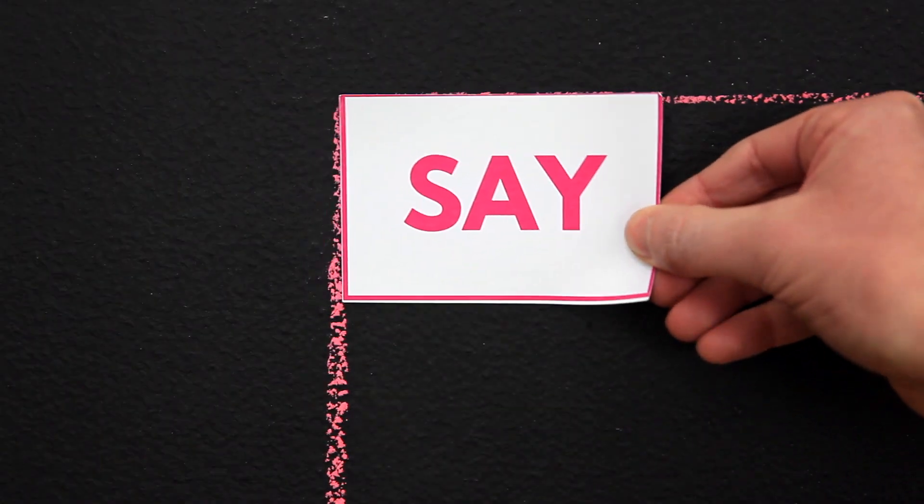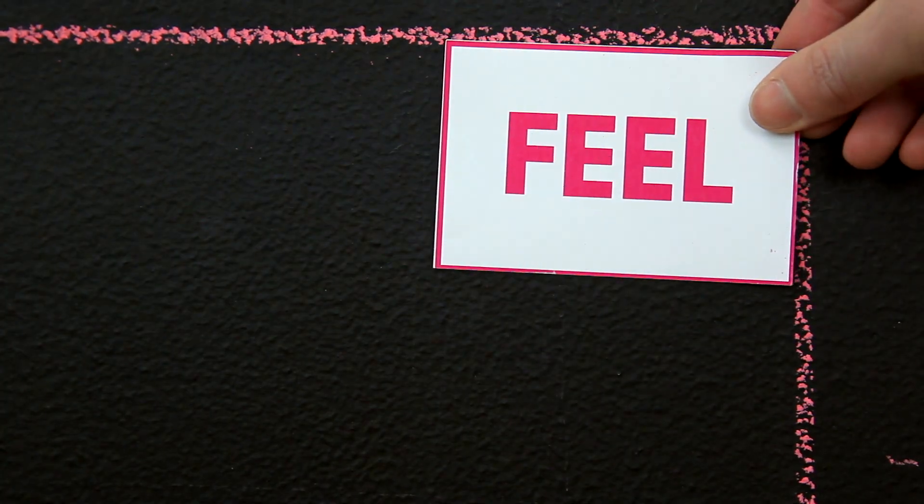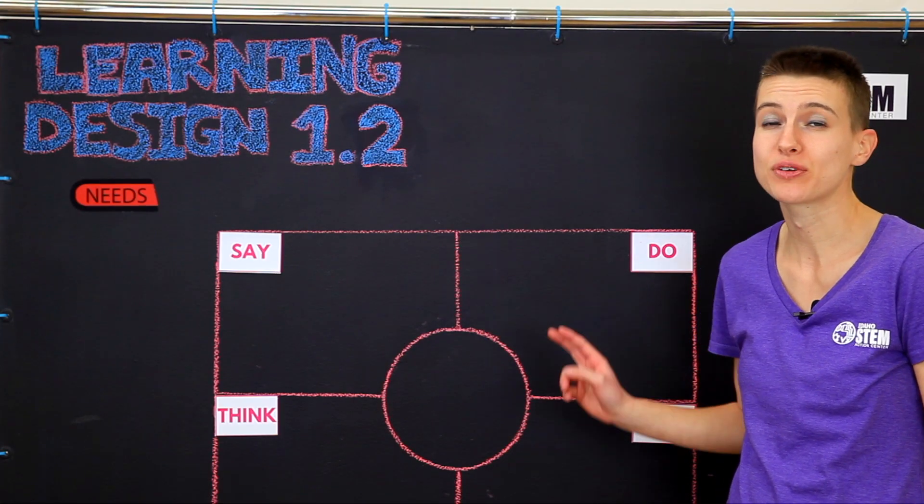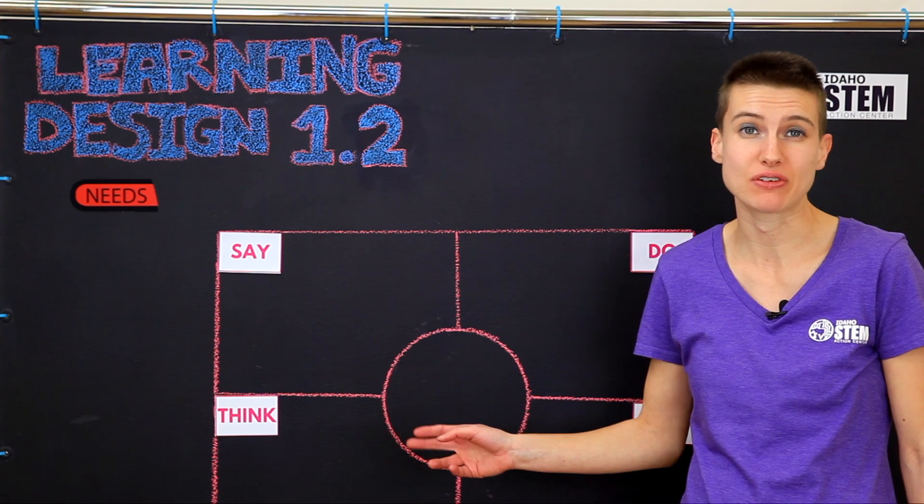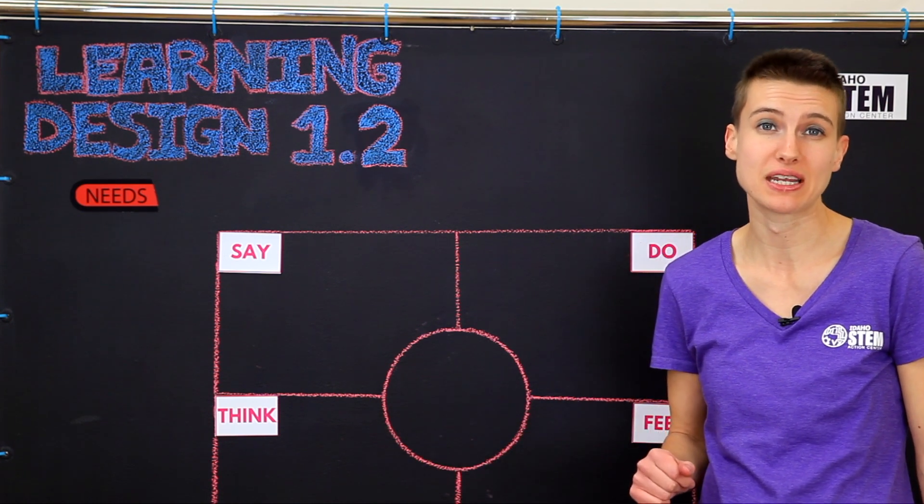I'll be using a simple format consisting of four quadrants: say, do, think, and feel. Each quadrant represents a different way of reflecting on your learner's behavior to help you gain insight about what they might need.